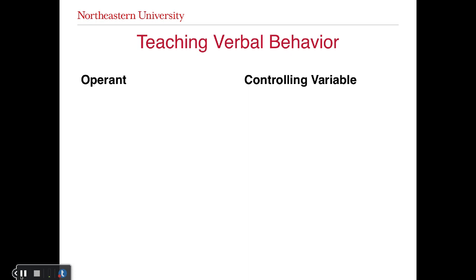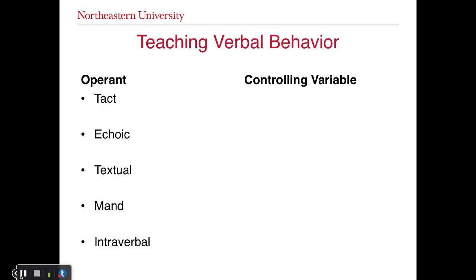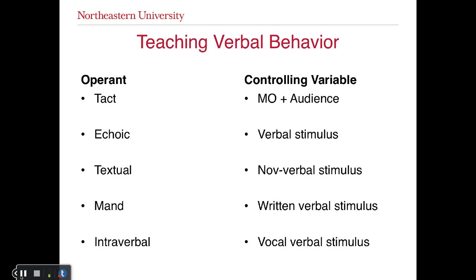To bring it to an academic example: I don't necessarily care that someone can say the word 'four' just walking around. You want people to say 'four' under certain environmental scenarios — in the presence of 'two plus two,' saying 'four' would be a desirable operant. We're looking for 'two plus two' to acquire stimulus control over the word 'four.' We reinforce saying 'four' in the presence of 'two plus two,' and when 'two plus two' is not present and they say 'four,' do not reinforce it. That's discrimination. When we're talking about verbal behavior and teaching the verbal operants, we have to go back to those controlling variables.